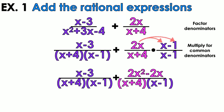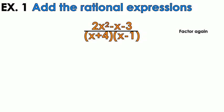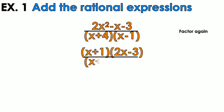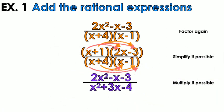Now the denominators match. Combine like terms in the numerator: we get 2x squared, then x plus negative 2x gives minus 1x in the middle, and minus 3 at the end. Then factor that numerator to see if anything cancels out. Nothing cancels, so multiply everything back — that's our final answer.